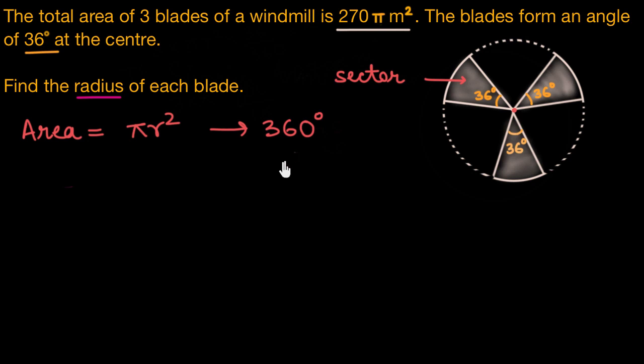Now, if we had a sector which made an angle of 1° at the center, then we could say that the area of this sector would be πr² times 1° divided by 360°.